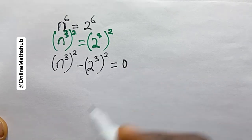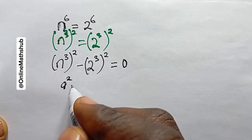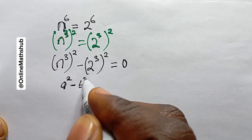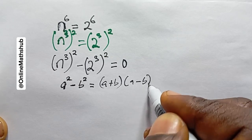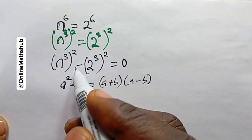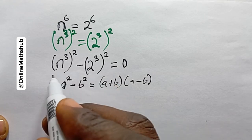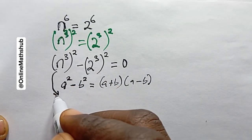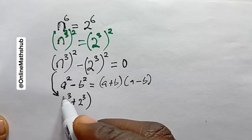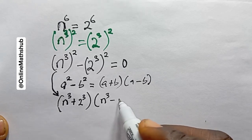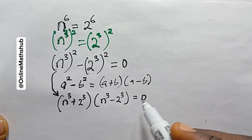This equals zero, and we've got a difference of two squares. Remembering the expansion a^2 minus b^2 equals (a + b)(a - b), I'll use this to expand, where a equals n^3 and b equals 2^3. Expanding gives (n^3 + 2^3) multiplied by (n^3 - 2^3), which equals zero.